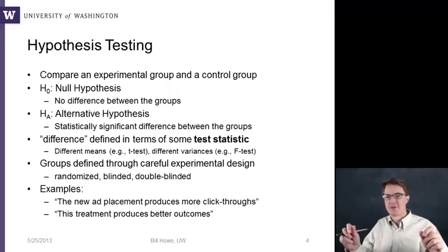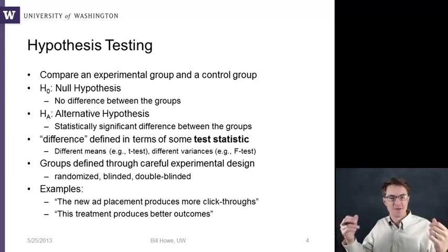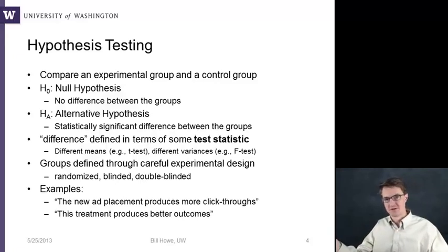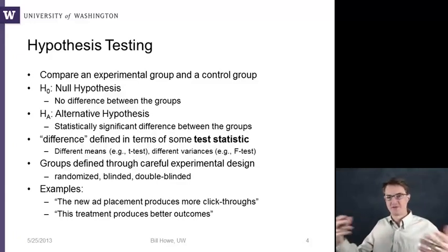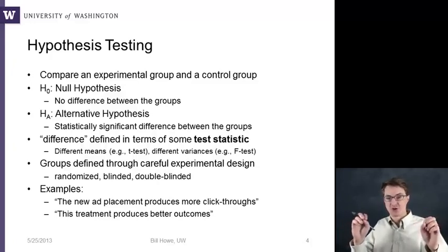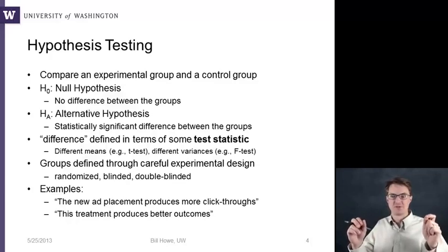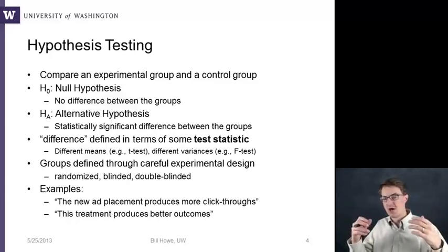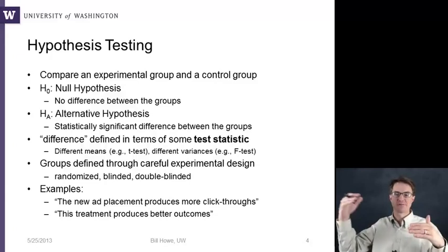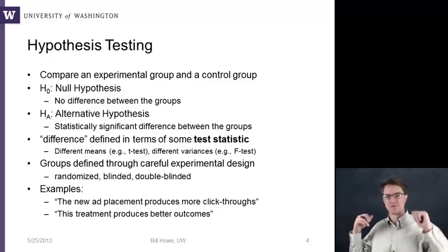So what is hypothesis testing? You're comparing an experimental group to a control group, and there's always a null hypothesis — that there is no difference between the two groups. For example, those who received the treatment are no different than those who did not, or the new website generates no more traffic than the old one. The alternative hypothesis is that there is a statistically significant difference, defined in terms of some test statistic. Most examples compare means — the average effect in the control group was different than the average effect in the experimental group.